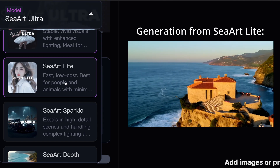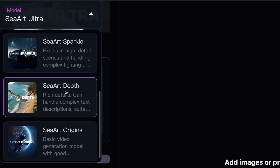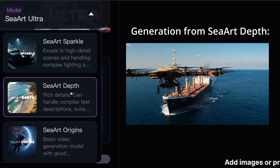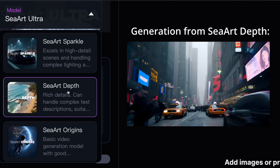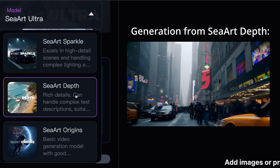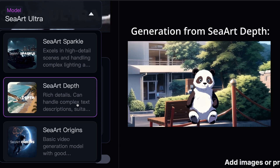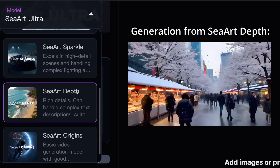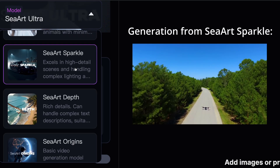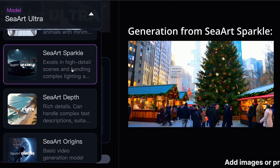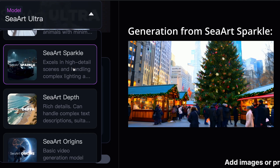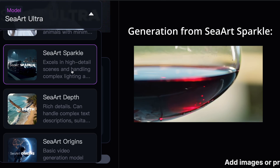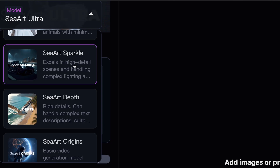It is best suited for videos with minimal movement, making it a perfect choice for basic creations. There's also the Depth model that has significantly enhanced detail expression, supporting direct output of 1080p HD video. It delivers natural and smooth motion, capable of responding to complex text descriptions, generating detailed dynamic videos with simple prompts, making it widely applicable across various scenarios. The Sparkle model is focused on generating high-detail frames, capable of handling complex lighting and camera angles. It delivers realistic frame quality and strong scene expressiveness, ideal for creating dynamic, lifelike scenes — the perfect choice for achieving ultimate visual effects.